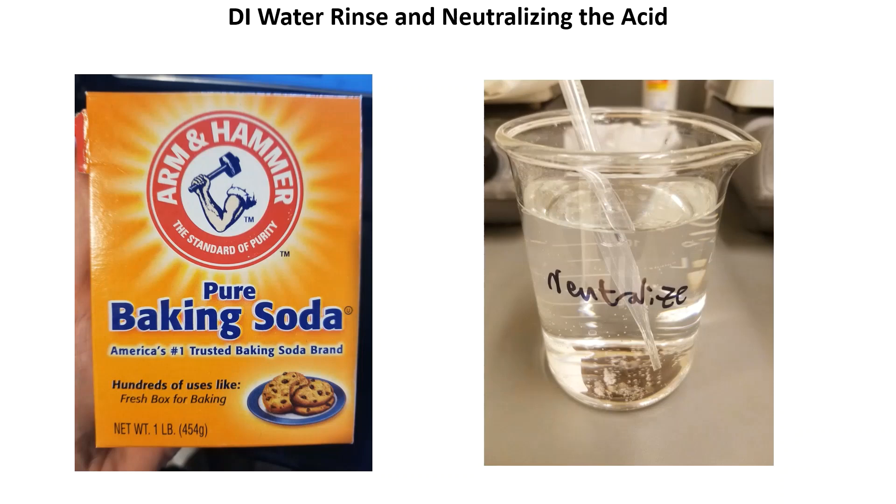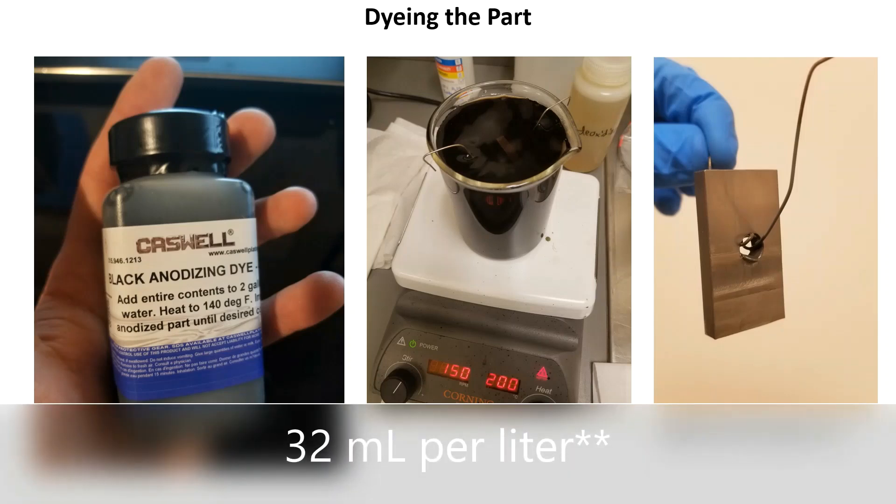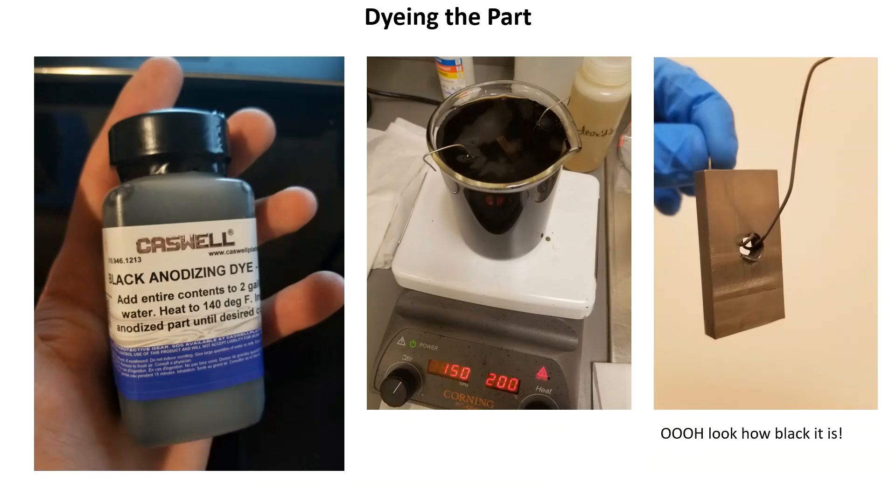I bought black anodizing dye from Caswell. Per the instructions of the chemical I mixed 16 grams per liter of dye in DI water and heated it to 60°C. I let the part soak in it for 15 minutes with a magnetic stir bar going. I pulled the part out and rinsed it with DI water. Obviously the part did not turn out very dark at all and I will go into detail as to why I believe this happened a little later.